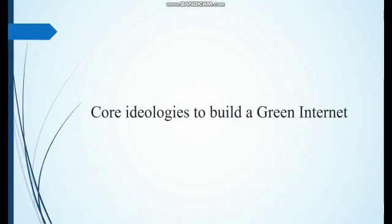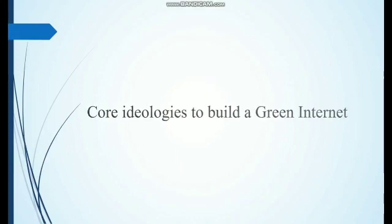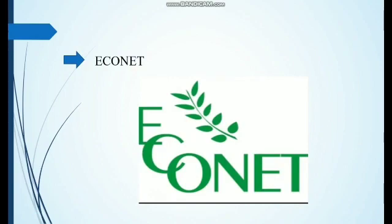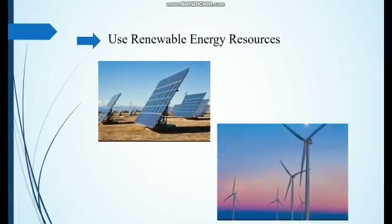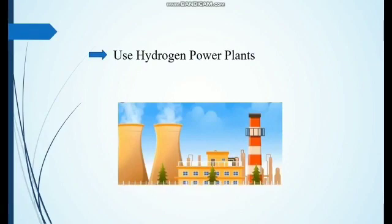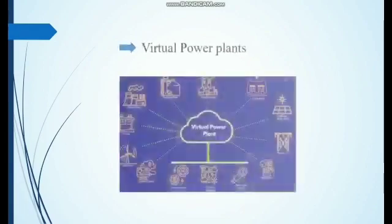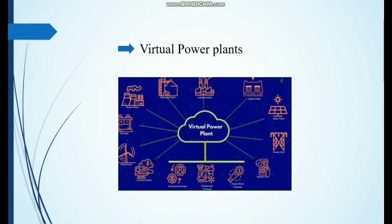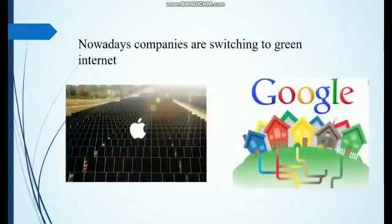The core ideology to build a Green Internet is to reduce energy consumption without compromising growth. Many effective methods have been proposed. One solution for effective energy use is Econet, where engineers have modified the router hardware design and software networking platform. A second solution is to use renewable resources of energy like wind turbines and solar panels. We can also decentralize power generation units using hydrogen power plants, introduce battery system solutions or virtual power plants. To manage heat produced by data centers, they are being set in colder environments — for example, Google and Facebook data centers are set near the North Pole, and Microsoft has placed data centers underwater, both of which reduce electricity demand.